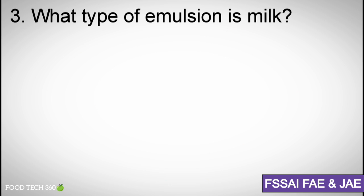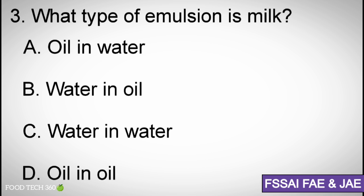Question number 3. What type of emulsion is milk? Options A. Oil in water, B. Water in oil, C. Water in water, D. Oil in oil. Correct answer A. Oil in water.